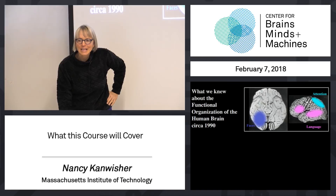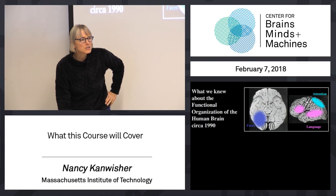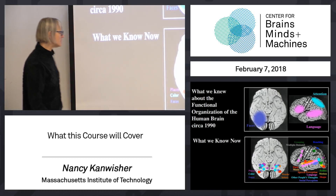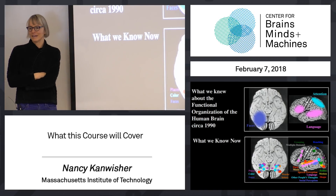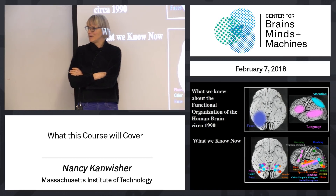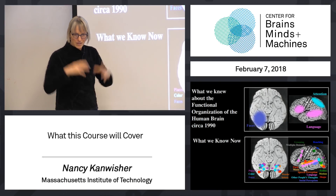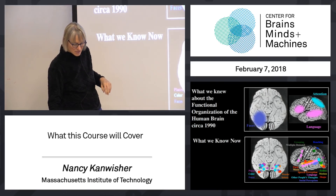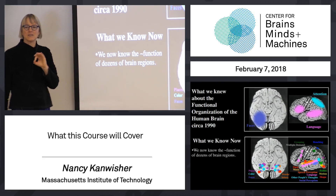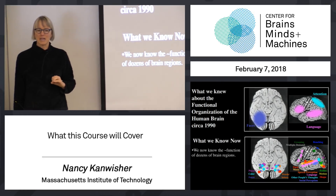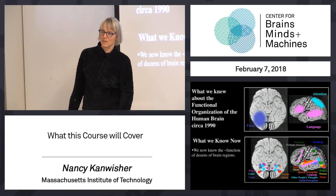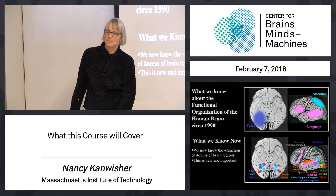So that's where we were not that long ago. And then functional imaging came on the scene, and this is what we know now. This is my very idiosyncratic, very schematic diagram of what we know about the functional organization of the human brain. There are dozens of regions of the cortex in the human brain for which we now have a pretty good idea what the function of that region is. That wasn't true 25 years ago — it's true now. It's new and important.